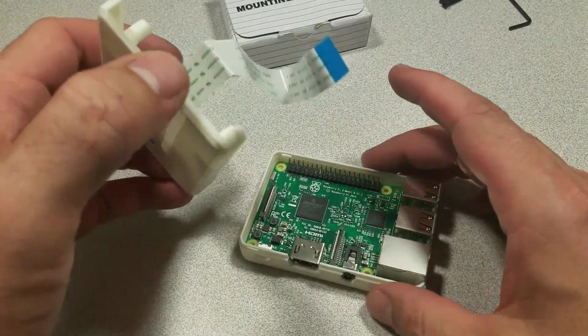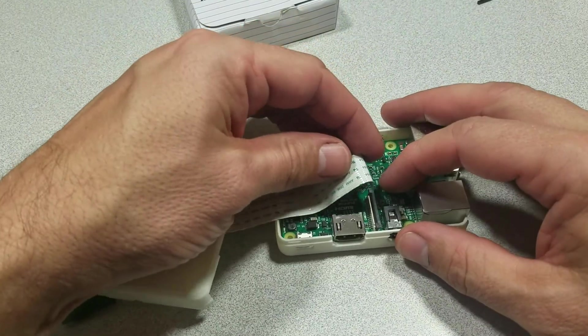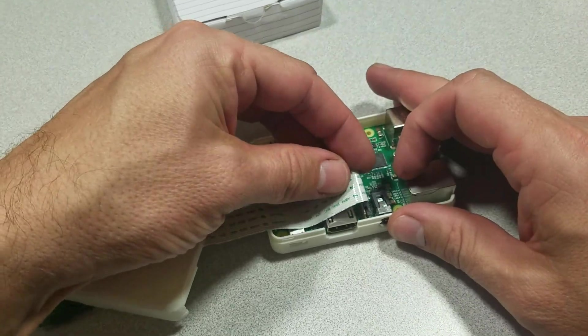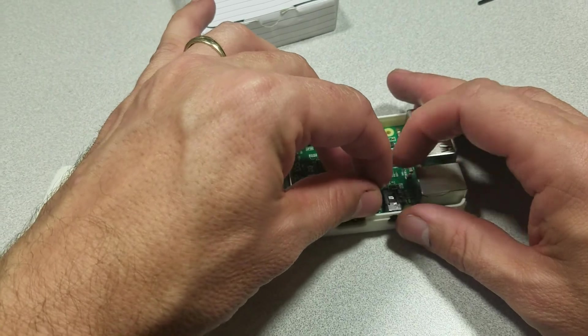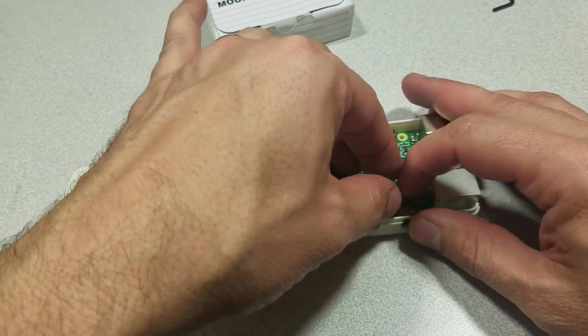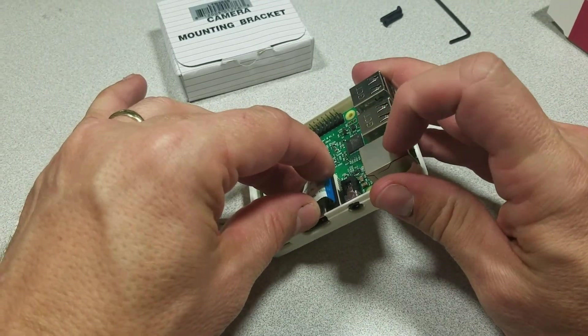Alright, now before putting this together we want to pull up on this, push it into place. Now you'll notice the blue side is facing the ethernet port. That's the way you want it.